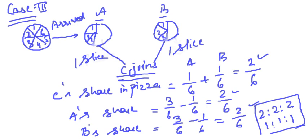As I mentioned in lecture 51, pizza represents nothing but the profits of the business. A and B are the old partners, and C is the new partner. In this case, they are giving one slice each out of their plates — one slice by A, one slice by B — and joining them becomes C's share.